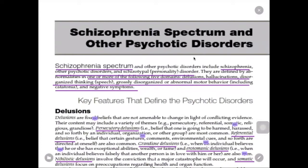Let me start with the page from DSM-5. Schizophrenia spectrum and other psychotic disorders include schizophrenia, other psychotic disorders, and schizotypal personality disorder. The latter will be covered in a different lecture, which is the personality disorder lecture.